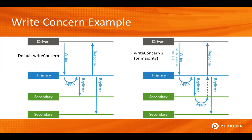Here we're using a graphic to display the differences between a write concern of one, which is the default, and a different write concern — in this case, a write concern of two. For this example, a write concern of majority would have worked similarly because we only have three nodes, so majority would have been a write concern of two.